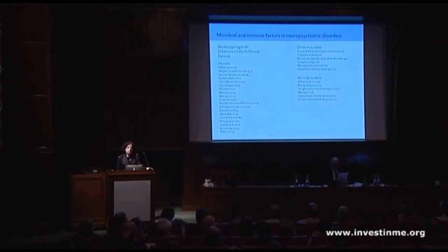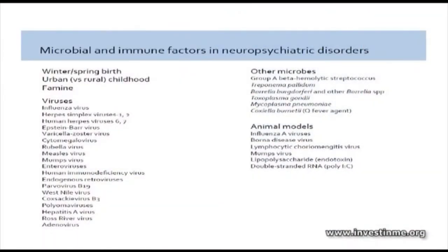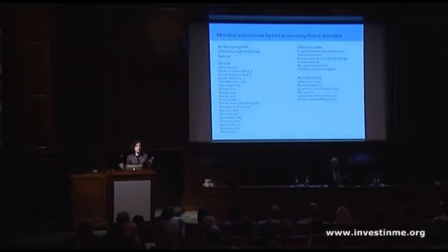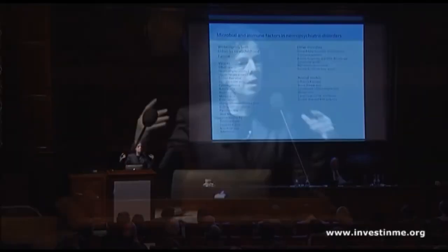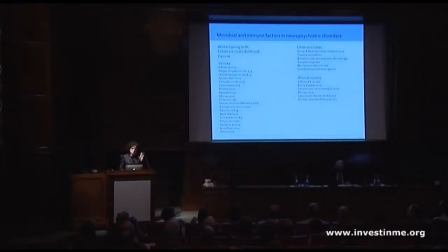The idea that microbes may be associated with brain disorders is not a new one, and there have been a whole host of agents implicated — viruses, bacteria, et cetera. Many of these we've been looking at in animal models, and many individuals have seen evidence of behavioral abnormalities and brain structural abnormalities that are reminiscent of the features we see in disorders like autism. There have been some findings in ME-CFS as well, but many fewer.